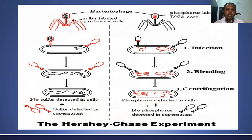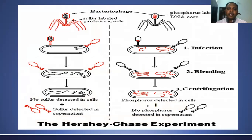The next important experimental proof that DNA acts as a genetic material was given by the Hershey-Chase experiment. Alfred Hershey and Martha Chase conducted this experiment using T2 bacteriophage and E. coli bacteria. They took two sets of T2 bacteriophage — one set grown using radioactive sulfur-35, so the protein coat was labeled with S35, and another set where only DNA was labeled with phosphorus P32.